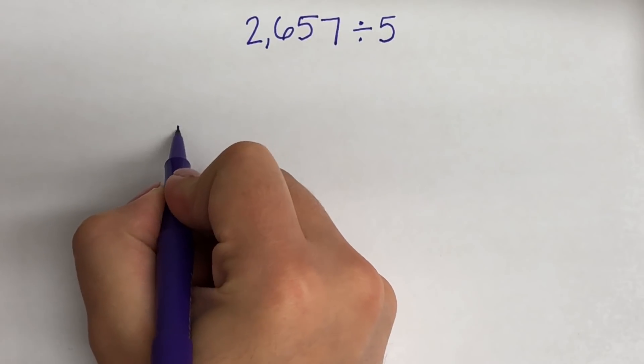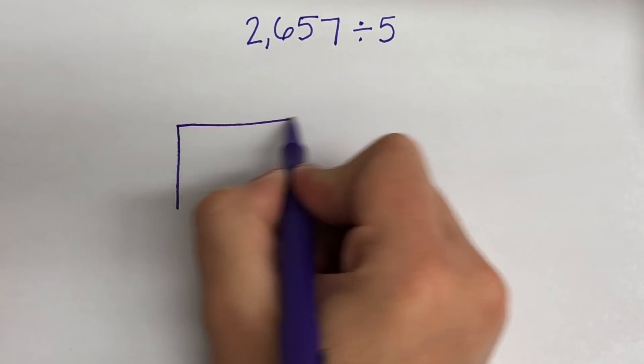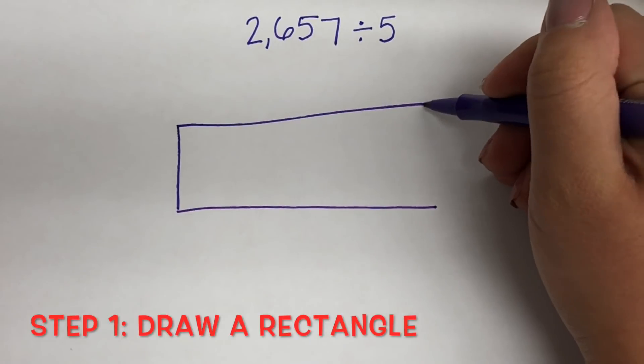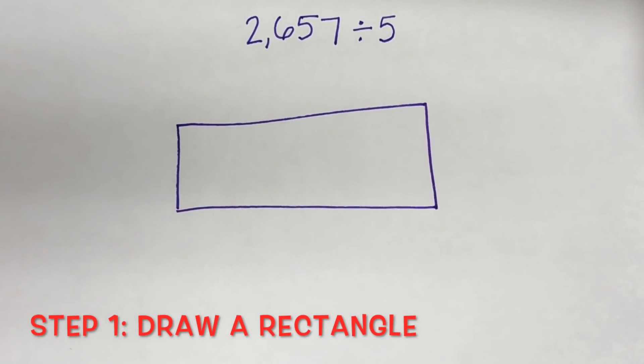All right, so our first step in a problem using this model is to draw a rectangle. Hence why we call it the box method or the area model. We need to have this rectangle.